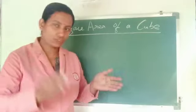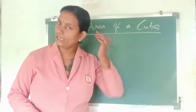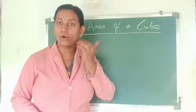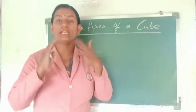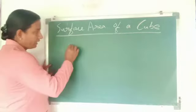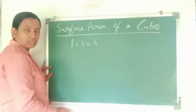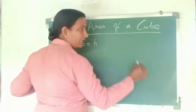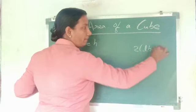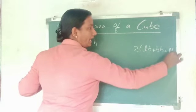Next topic: surface area of a cube. A cube is a special type of cuboid in which all its edges are of equal length, that is L equals B equals H. We know the surface area of a cuboid is 2(LB + BH + LH).